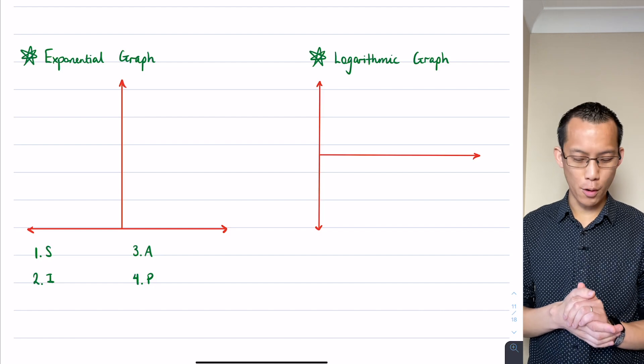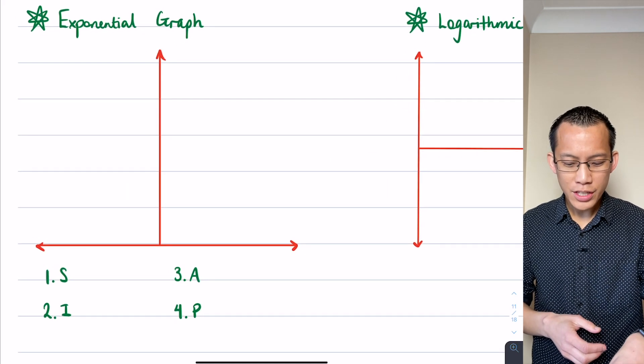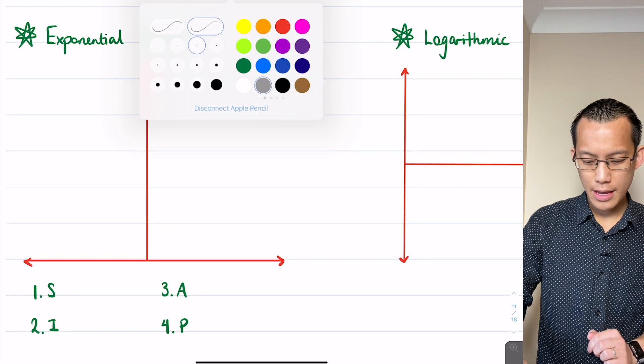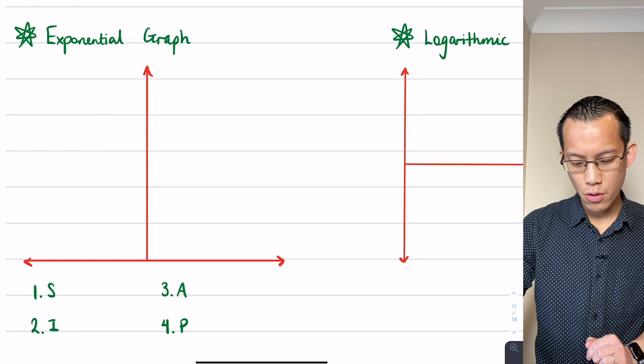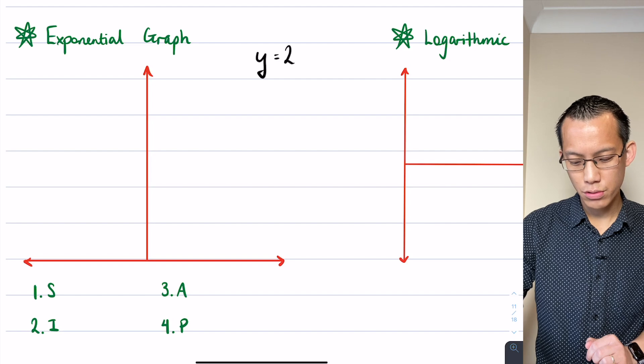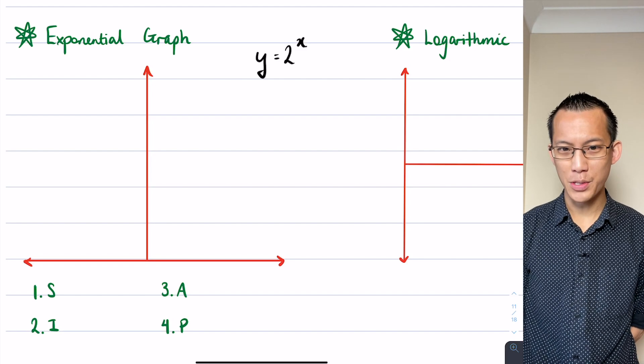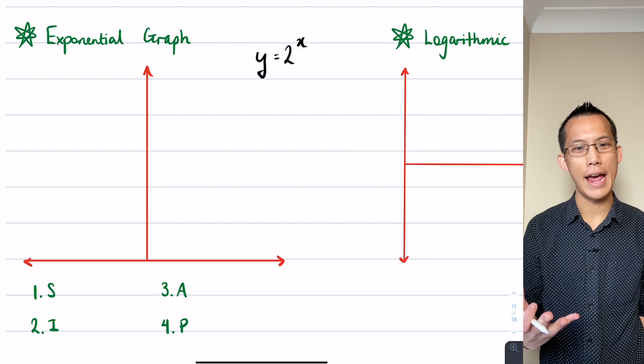We're going to draw on these graphs and then we're going to highlight the four features. Let's start with the exponential. Let's all draw y equals 2 to the power of x.